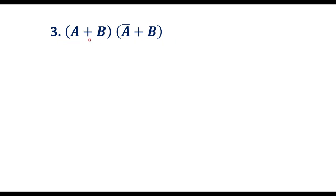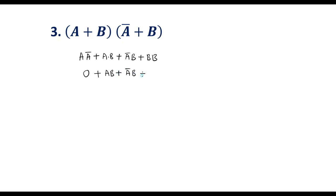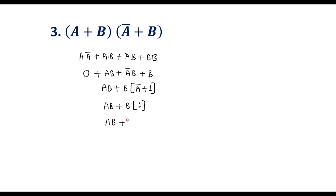Now let me consider the third example: (a + b)(ā + b). I will multiply these terms: a·ā = aā = 0, plus a·b = ab, plus b·ā = āb, plus b·b = b. Simplifying: 0 + ab + āb + b. I take b common from āb + b to get b(ā + 1), and ā + 1 = 1. So we have ab + b·1 = ab + b.